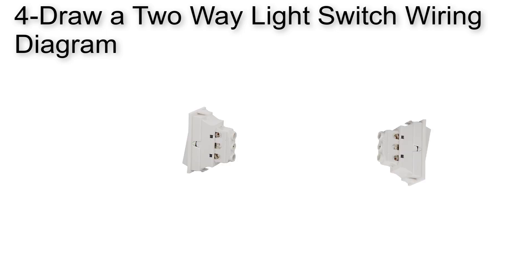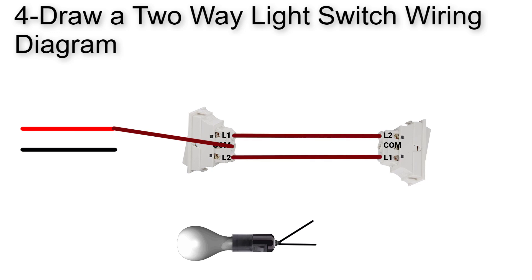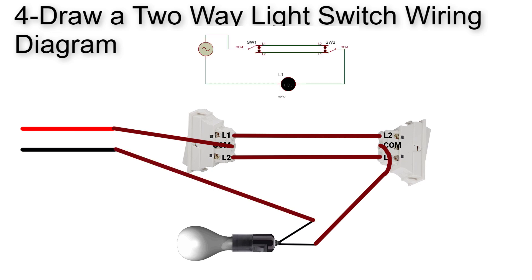The fourth question is: draw a two-way light switch wiring diagram. We have answered this in a separate video with more than one method, but today we will choose one connection. Bring two two-way switches, the power source, and the lamp. Connect the line to the common pin of the first switch. Connect L1 to L2 and L2 to L1. Connect the second common pin to one terminal of the lamp. The second terminal of the lamp connects to the neutral.